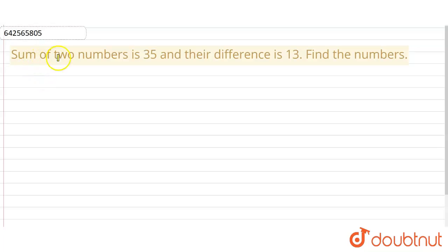The question is: sum of two numbers is 35 and their difference is 13. Find the numbers.